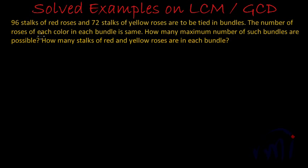And at the same time, that number of bundles should also be a factor of 72 because we're distributing equal number of yellow roses among those bundles. So the total number of bundles will be a factor of both 96 and 72. Then only we will be able to distribute the number of roses equally.